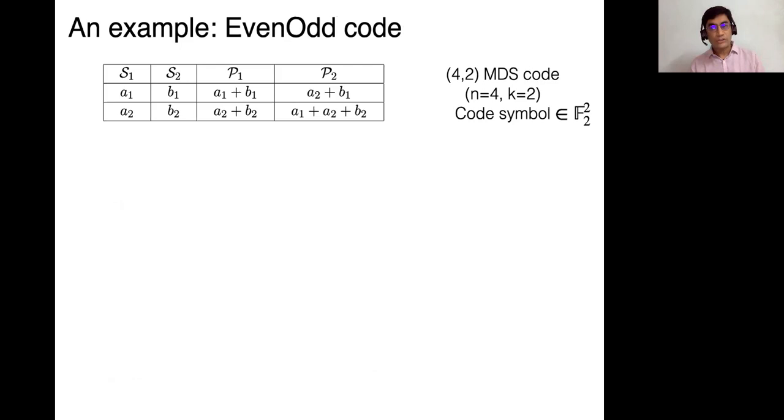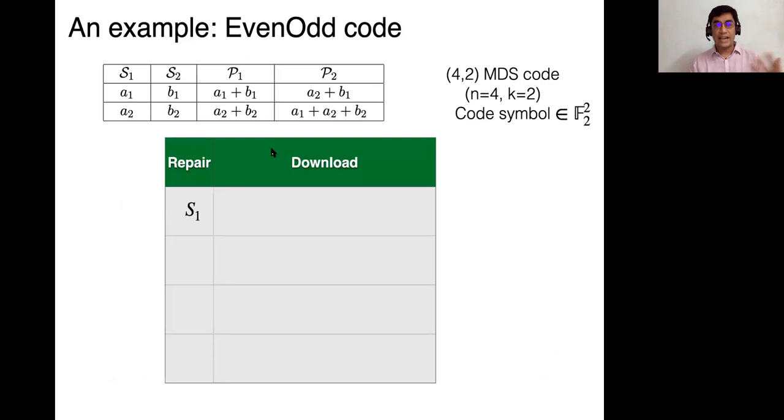And what this is, is that it's a code with K equals two and N equals four here, simple example. And each code symbol consists of two bits. So it's a vector of length two, two bits. So the message symbols are A1, A2 and B1, B2. And then you store two other parity nodes, A1 plus B1, and A2 plus B2. And this is the other parity. So a parity node is just take some linear combination of your message content. And suppose the first node goes down, you need to recover A1 and A2. You can contact any two of these other nodes and download both of their bits for a total of four bits. But if you look at this example, if you just download the top half of each of these nodes, that itself is enough to recover A1 and A2 because you can cancel B1 to get A1 and you can cancel B1 to get A2 as well.